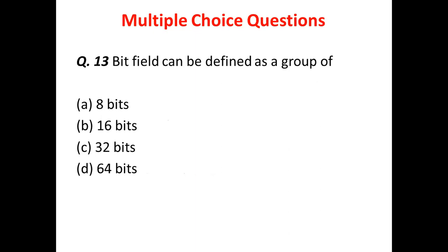Question 2: A bit field can be defined as a group of how many bits? Option A is 8 bits, Option B is 16 bits, Option C is 32 bits, and Option D is 64 bits. The answer is 32 bits — that is Option C.